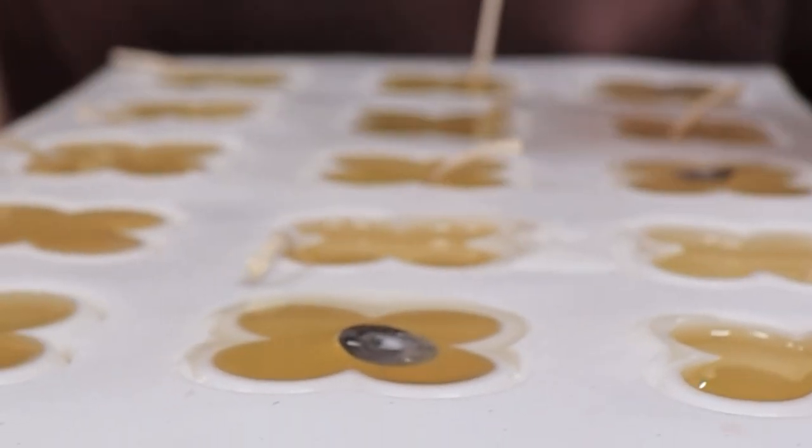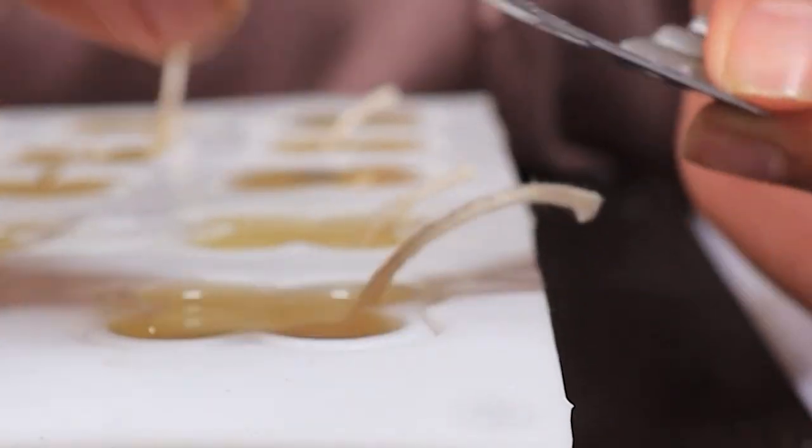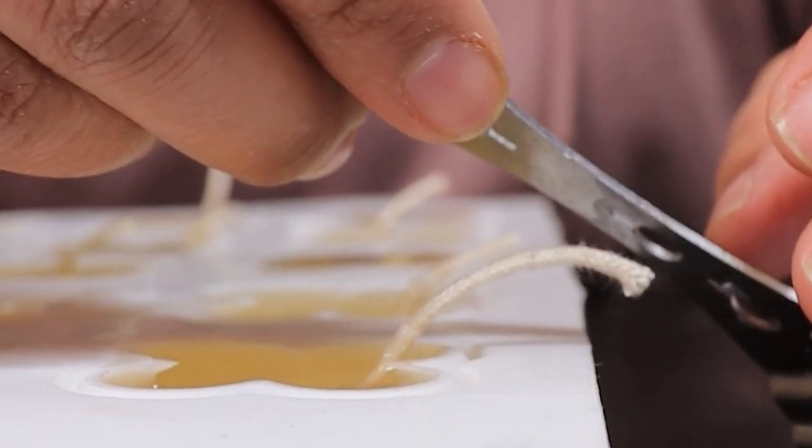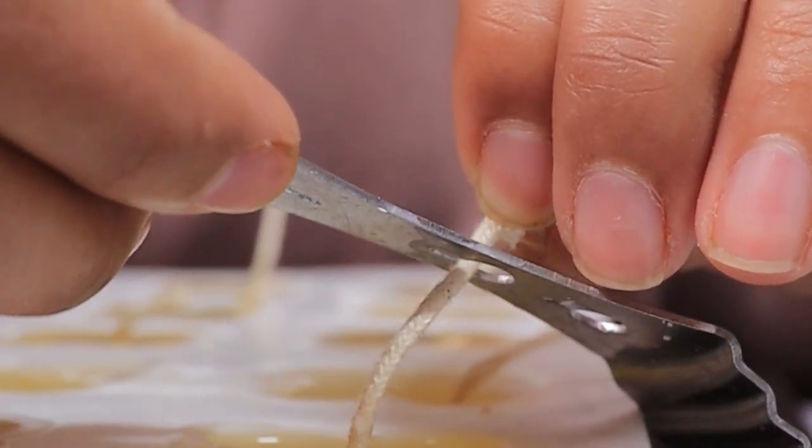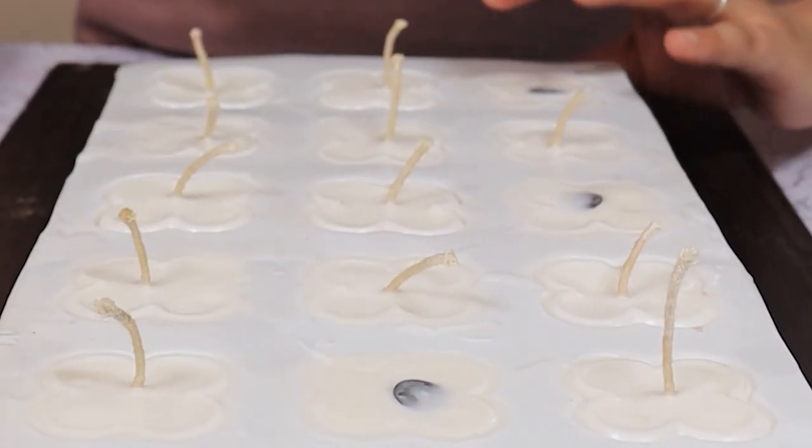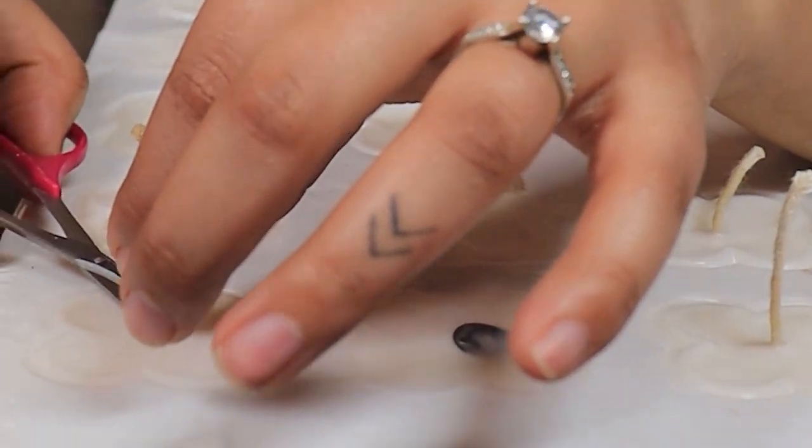While these wicks do not need any holders, the thread ones do. So don't forget to add a wick holder. And here we go. Our candles are set. We are going to trim the wicks.